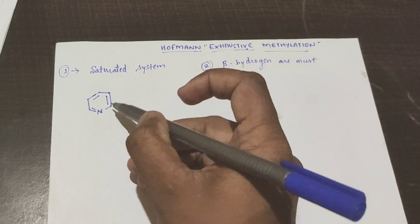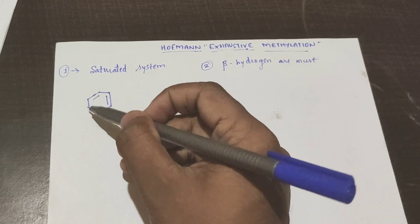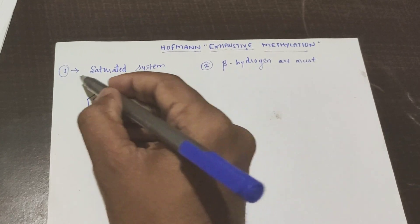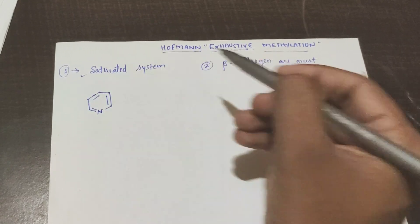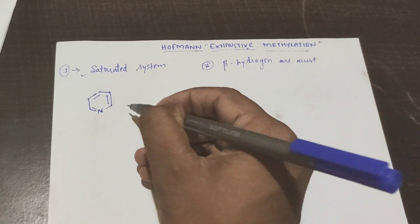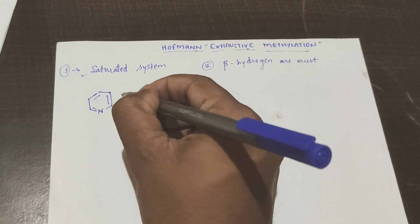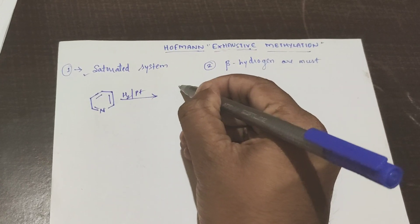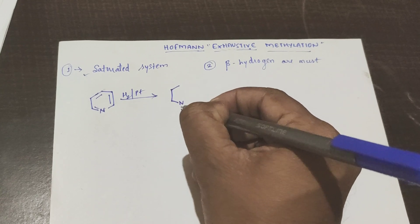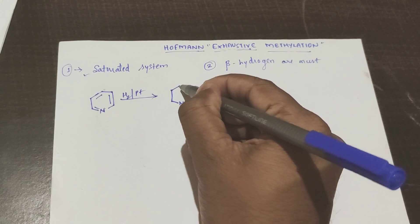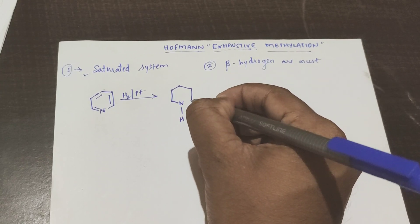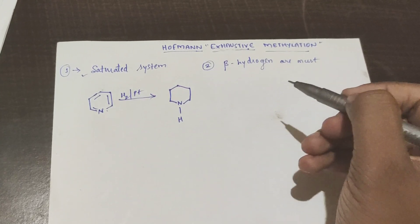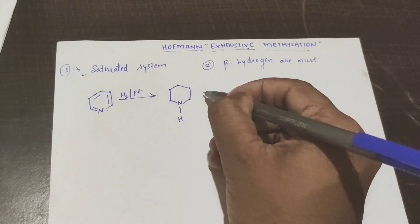I have taken a pyridine nucleus. If you see the pyridine nucleus, it is in an unsaturated form. The condition requires it to be saturated, so I will do the reduction of pyridine to convert it from the unsaturated form to the saturated form. Now these two things you should remember.